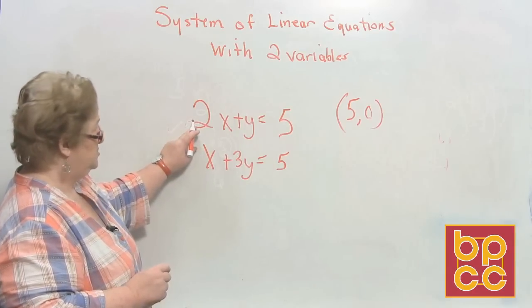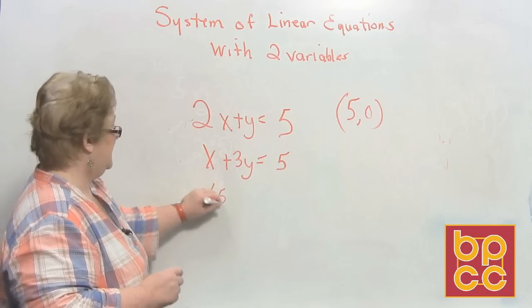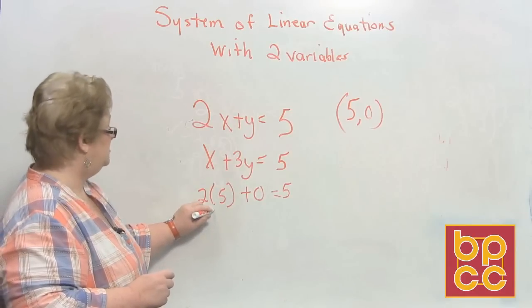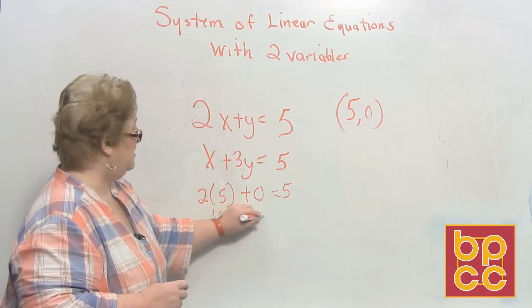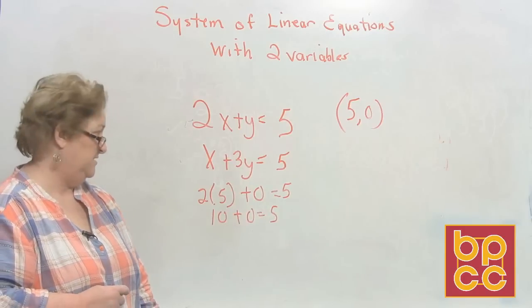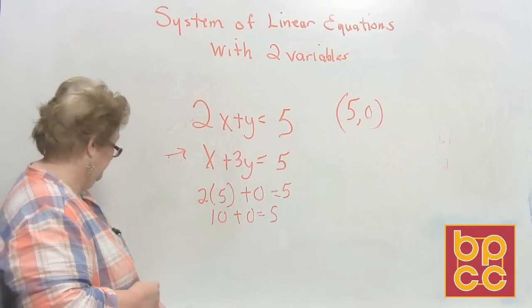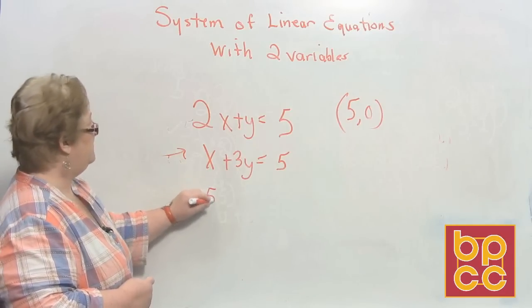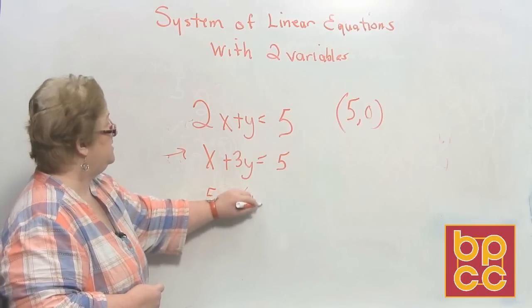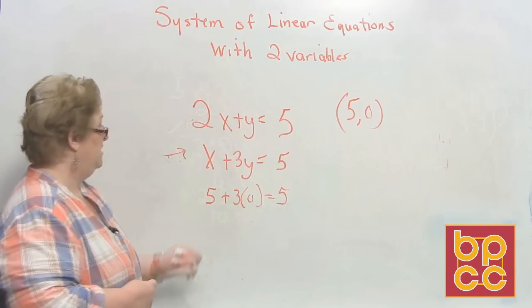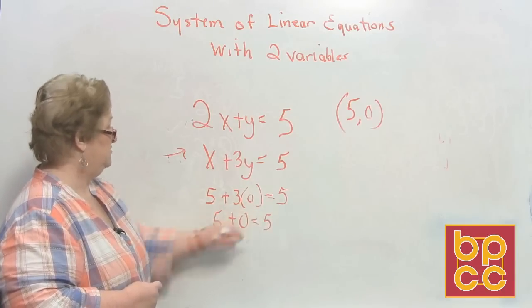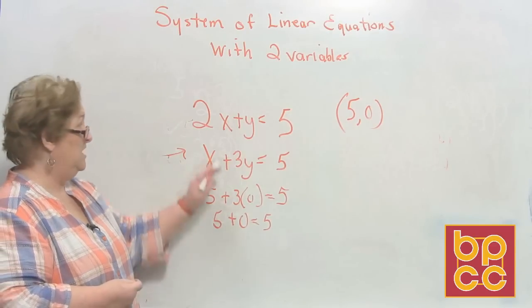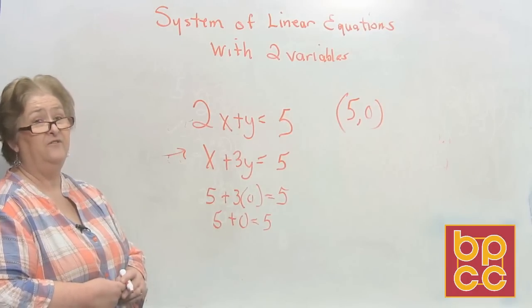Let's substitute in the first one. 2 times 5 plus 0 equals 5. 2 times 5 is 10, and 10 plus 0 does not equal 5. That doesn't work. Let's try the second equation. x is 5, so 5 plus 3 times 0 equals 5. 5 plus 0 equals 5. But only one of them worked, so this is not a solution for these two linear equations. We'll be ready to graph in the very near future.